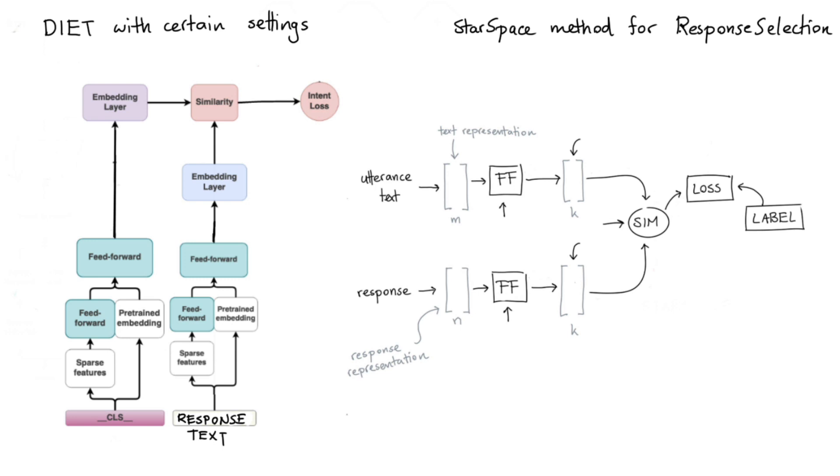So, a few things to conclude and to wrap up. On the left hand side, we have our DIET implementation, but with specific settings. The base settings that we have here remove the transformer. And because there are no intents here, we have responses and they have texts, we have the opportunity to reuse some of our featurization, which we normally don't do when we use DIET as a classifier.